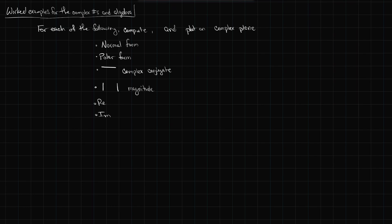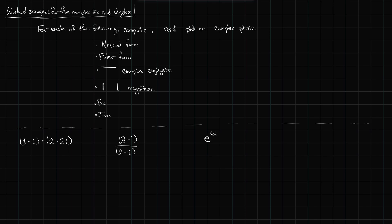So what are the four expressions we're going to work with? We'll do (1 − i)(2 − 2i), then (3 − i)/(2 − i), then e^(6i) − 2e^(−2i), and finally e^(2i) − e^(iπ). Those are the four terms we're going to apply each of the above operations to.